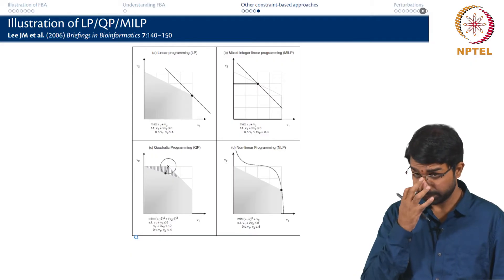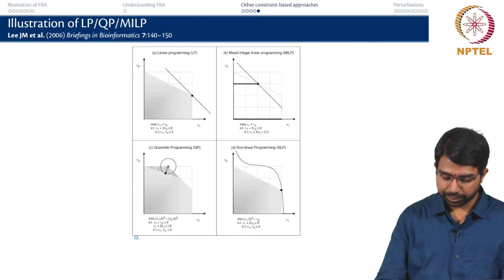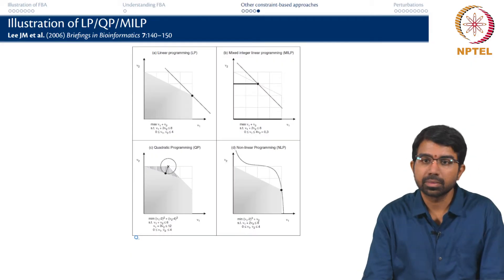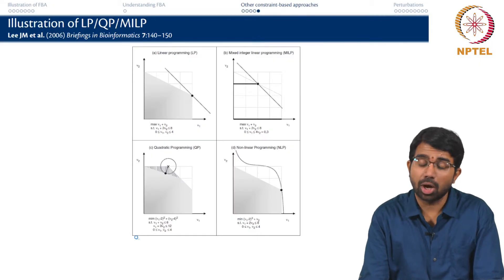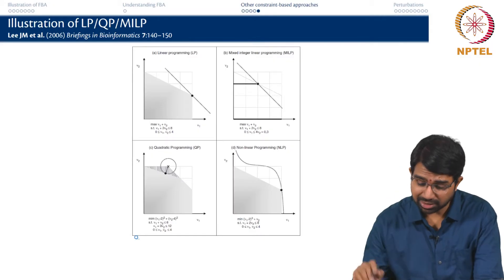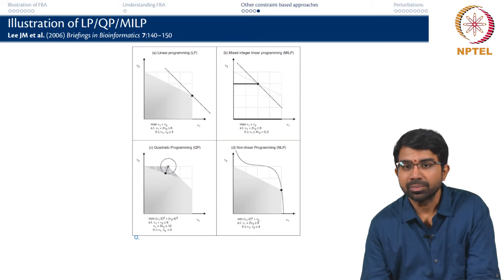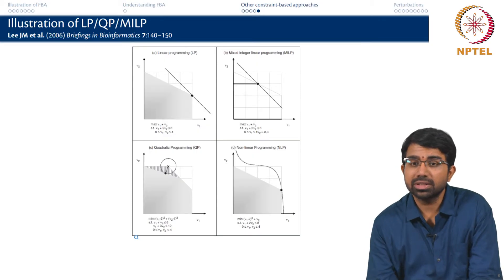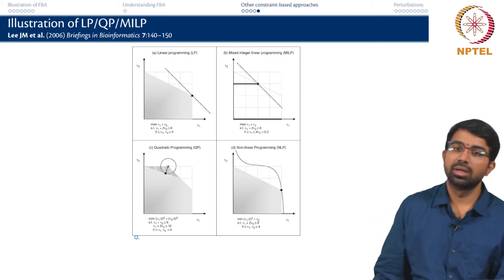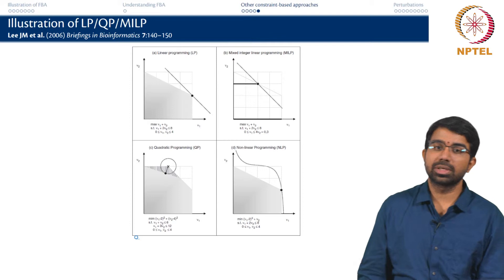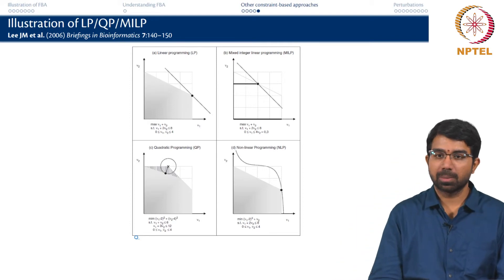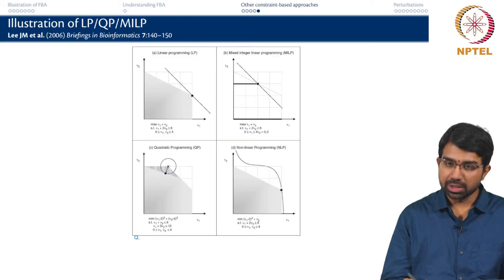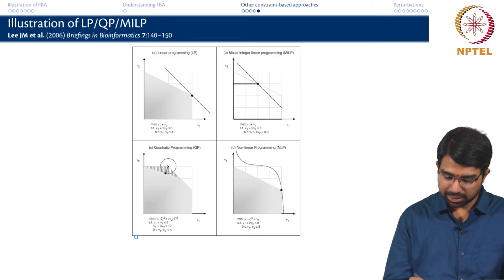A student asks about quadratic programming: the constraints are linear. The instructor confirms that in all cases the constraints are linear, but the objective function for optimization is non-linear, mixed integer, or whatever form is appropriate. The wild-type flux is the original flux, and the previous optima and new optima are distinct points.